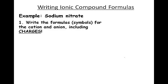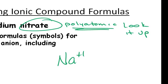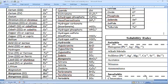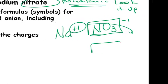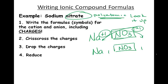Sodium nitrate: sodium is Na positive one. Nitrate is a polyatomic — look it up on the ion chart, scrolling all the way down. Nitrate is NO₃ negative. Be careful not to confuse it with nitrite just below it. Protect the polyatomic NO₃ in a box with the negative outside. Crisscross: NO₃ with a positive one, Na with a negative one. Drop the charges. We have a one-to-one ratio, so the formula is NaNO₃.